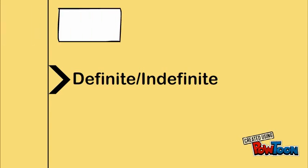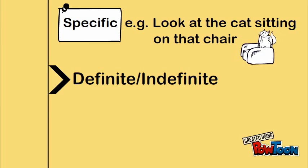Therefore, definite nouns are specific. For example, in the sentence look at the cat sitting on that chair, both you and your reader or listener know what cat you are referring to. Consequently, the noun cat is definite in this sentence.